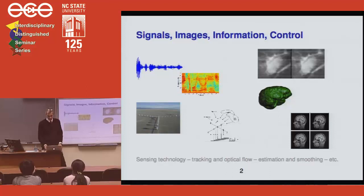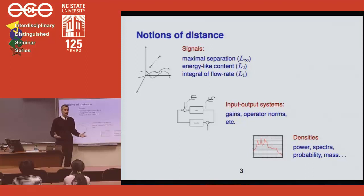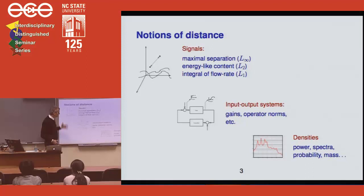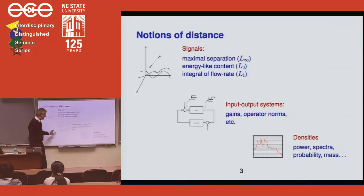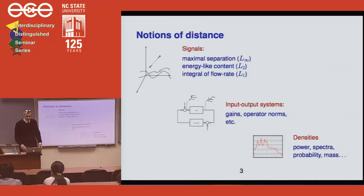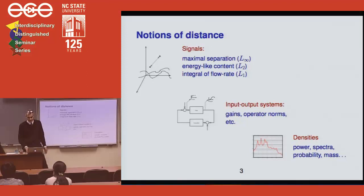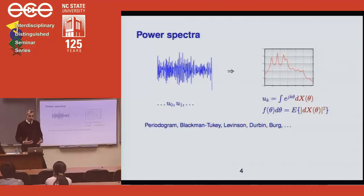In everything that we do as engineers, we require metrics. We quantify uncertainty, distances between dynamical models. When you quantify distance between signals, we have well-defined distance measures between points and trajectories. In systems, one spends a lot of time thinking about robust analysis and control, operator norms and gains. When you talk about densities, probability distributions, and masses, a different kind of metric is relevant.